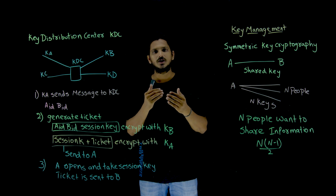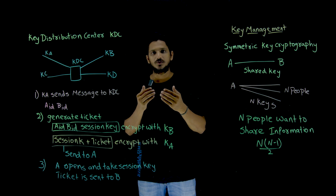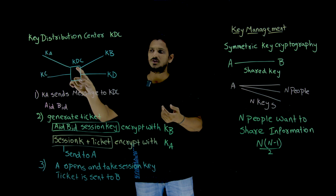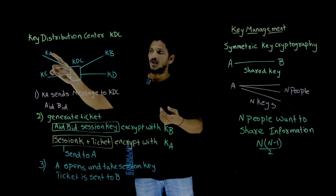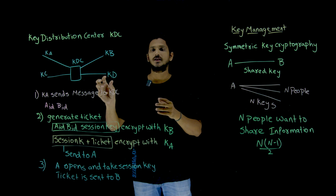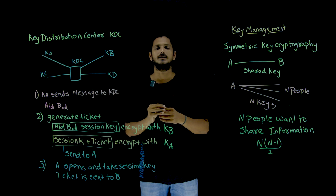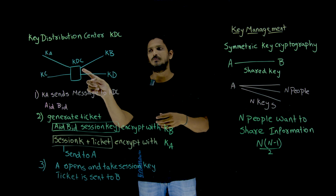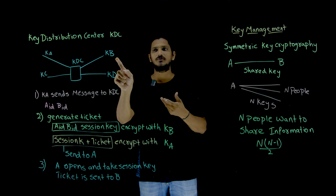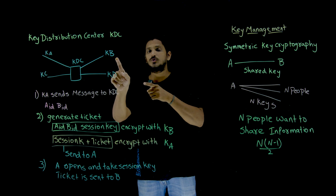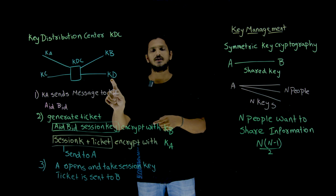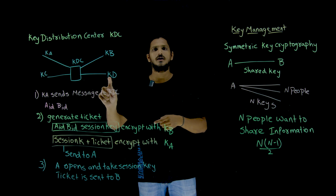By the time you register with the Key Distribution Center, the two parties — KDC and A — exchange one key, which is the secret key between A and KDC. Similarly, if B registers, KB is the key shared between KDC and B. This is the secret key which B uses to share information between B and KDC. Similarly, KD is the key between D and KDC.